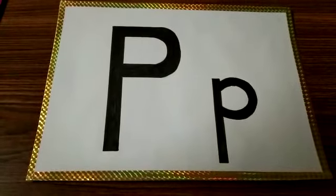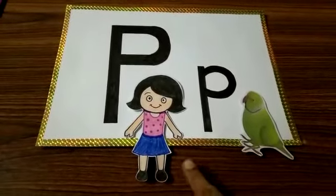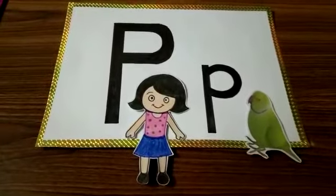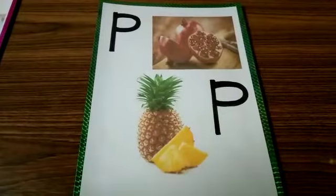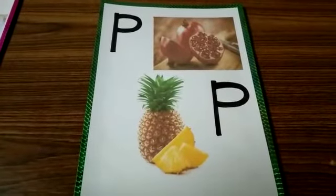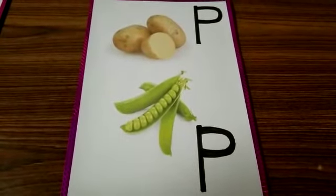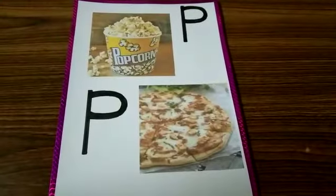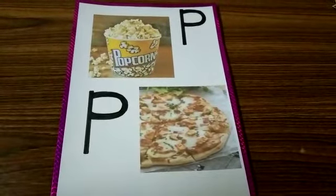Let's revise the words again. P P Polly, P P parrot, P P park, P P pomegranate, P P pineapple, P P potato, P P peas, P P popcorn, and P P pizza. Now children,